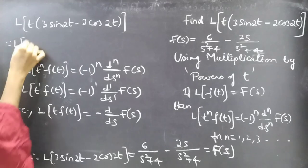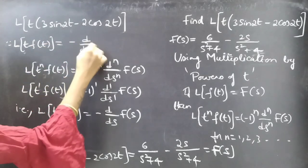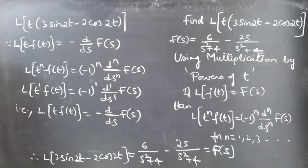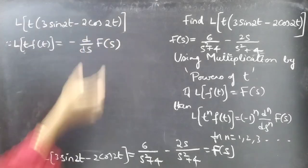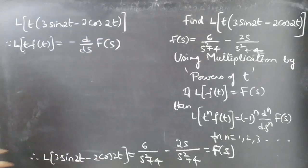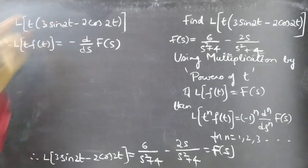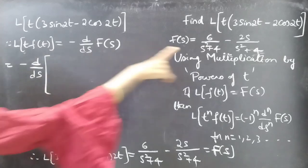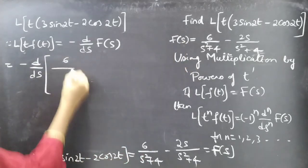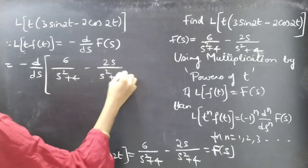Since L of t·f(t) equals minus d/ds of F(s), and we have F(s) equal to 6 divided by s² plus 4 minus 2s divided by s² plus 4, we now apply this formula and take the derivative of F(s) with respect to s.